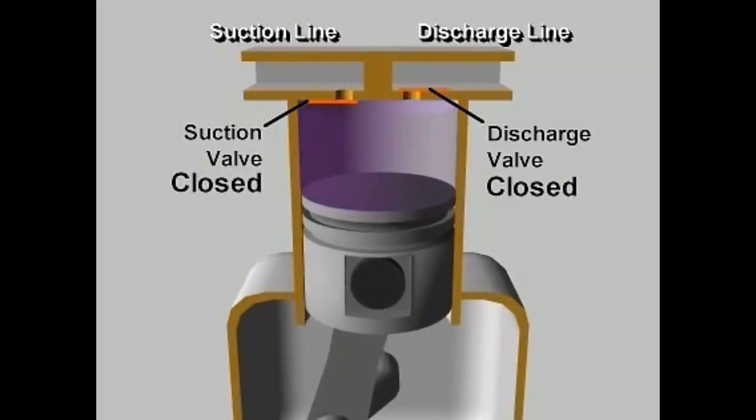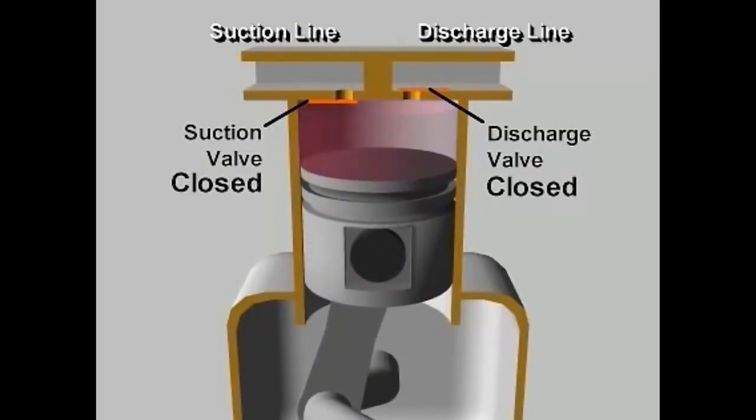The suction valve closes. As the piston moves up, it reduces the volume of the space in the cylinder, increasing the pressure of the vapor.